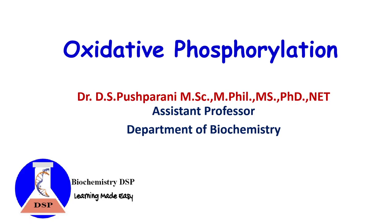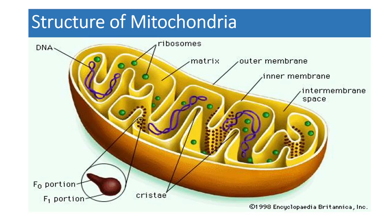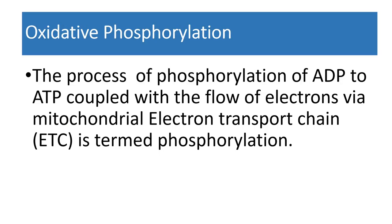Welcome to the Biochemistry DSP channel. Today I will be explaining about oxidative phosphorylation. This is the structure of mitochondria. The inner mitochondrial membrane is organized into five complexes. Four of these complexes are involved in the electron transport chain, and the fifth complex is responsible for forming ATP. Oxidative phosphorylation takes place in the inner mitochondrial membrane.